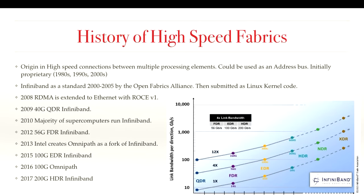Then came constant upgrades in speeds. In 2007–2008 we were at 20 gigabits. In 2009, 40-gig QDR InfiniBand came out. In 2010 the majority of supercomputers were running InfiniBand. Then 56-gigabit FDR. In 2013, Intel began creating a competing technology called Omnipath. In 2015, 100-gig EDR InfiniBand appeared, along with 100-gig Omnipath from Intel. This year, probably 200-gig HDR InfiniBand and a competing Intel standard. We expect speeds to roughly double every two years for the next ten years or so.